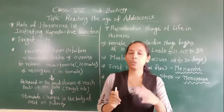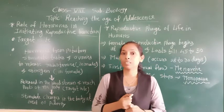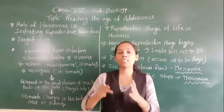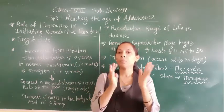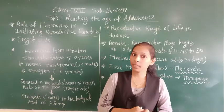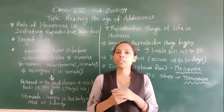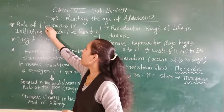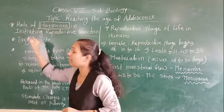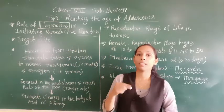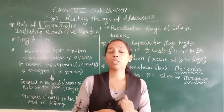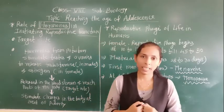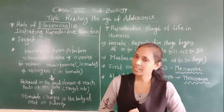As we know from our previous lecture, hormones are the chemical messengers which bring so many changes in our body at the onset of puberty. During puberty, so many changes occur in our body and all those changes take place because of these hormones. These hormones are chemical substances secreted by the different glands — specifically by the endocrine glands, which are also called the ductless glands.